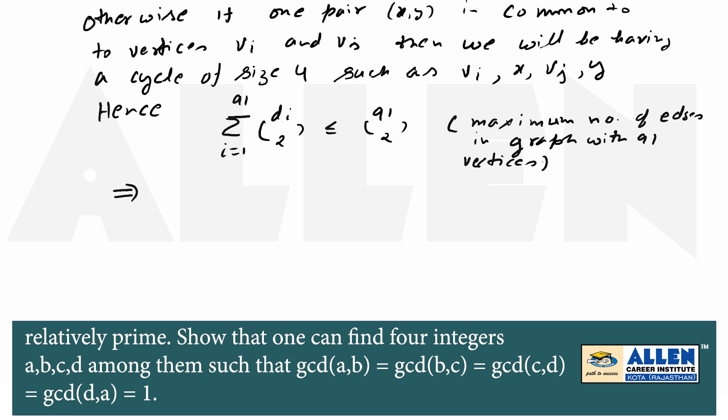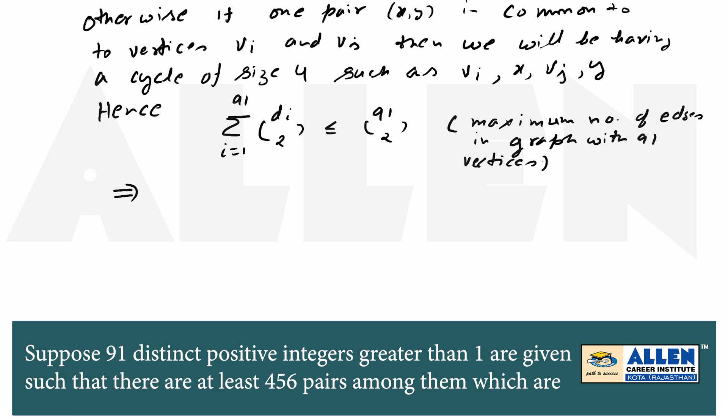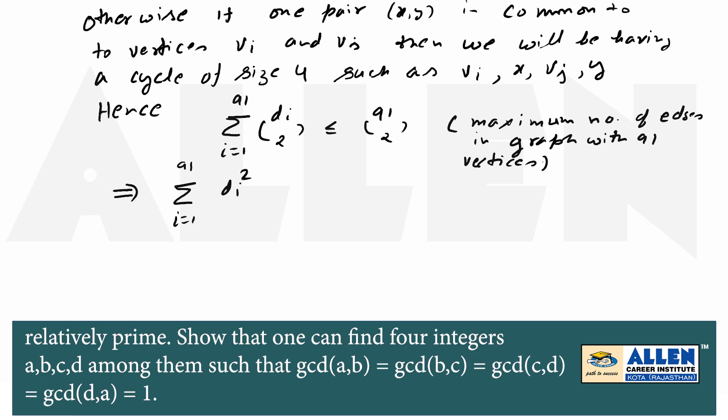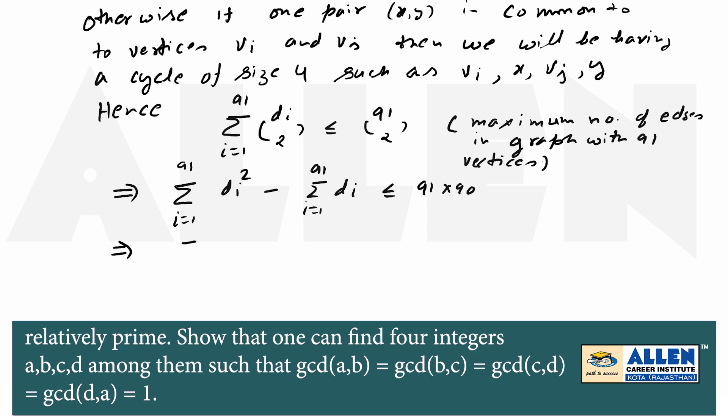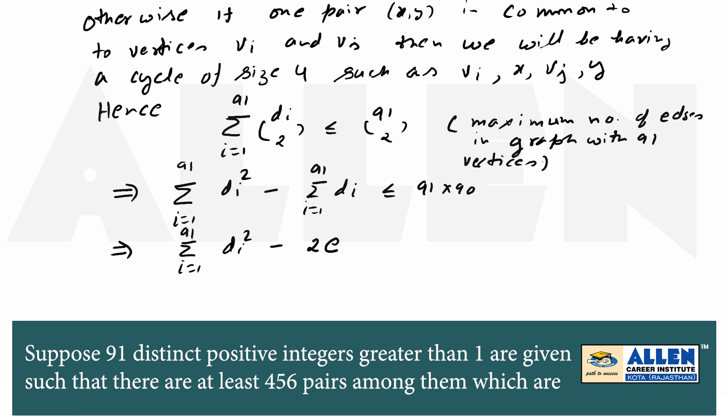This implies sigma i from 1 to 91 di square minus sigma i from 1 to 91 di less than equal to 91 into 90.